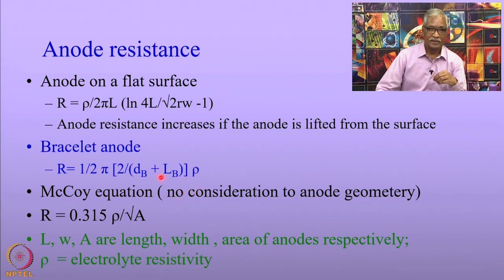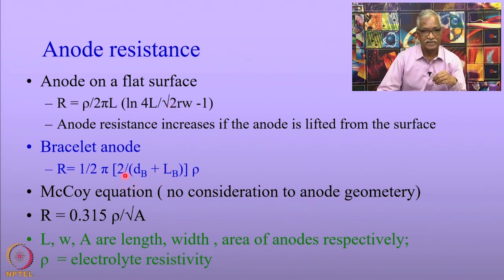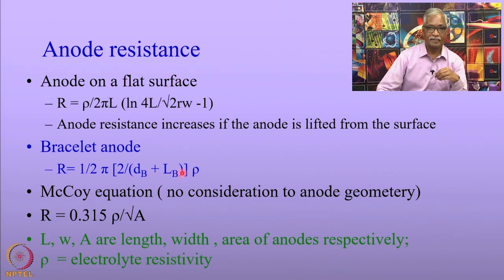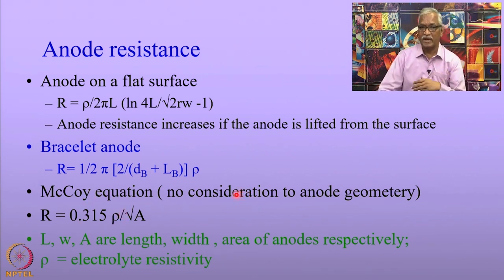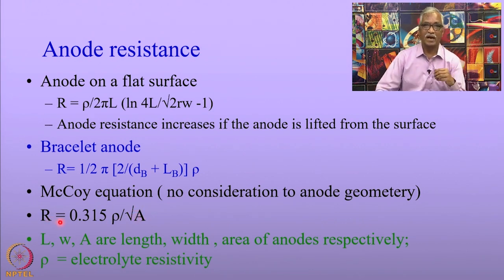If you are going to use bracelet anodes, the diameter and width of the bracelet anode are used in the calculation. The equation to calculate the resistance of the anode changes depending on whether the surface is flat or curved as with bracelet anodes. Very simplified equations are also used — called the McCoy equation — which does not take anode geometry into consideration. All you need is the resistivity of the electrolyte (such as seawater) and the area of the anode to calculate the resistance offered by the anode.